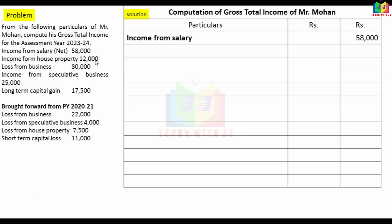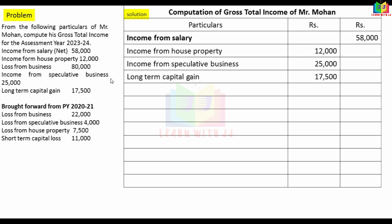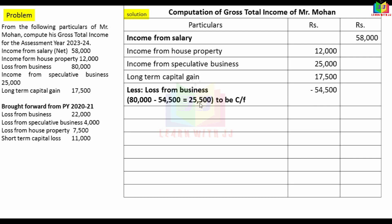Income from speculative business Rs.25,000 and long-term capital gain Rs.17,500 are available. The current year loss from business Rs.80,000 is set off against: salary Rs.58,000, house property Rs.12,000, speculative business Rs.25,000, and long-term capital gain Rs.17,500 — total Rs.54,500 is absorbed. Balance loss from business remaining = Rs.80,000 minus Rs.54,500 = Rs.25,500, which is carried forward.